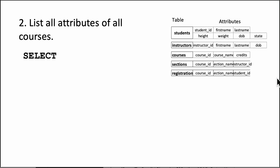Let's look at question number two — it says list all attributes of all courses. It's really just a repeat of question number one. For convenience, the schema is included here in reduced form. The tables are students, instructors, courses, sections, and registrations. The question asks us to list all attributes of all courses.